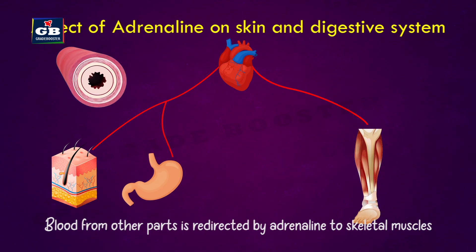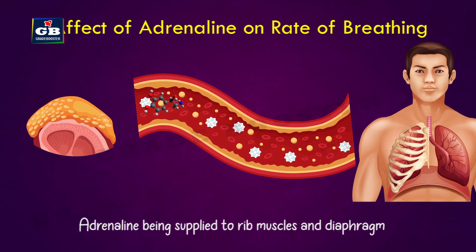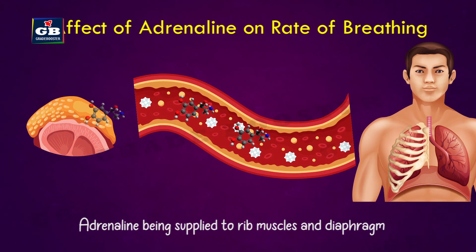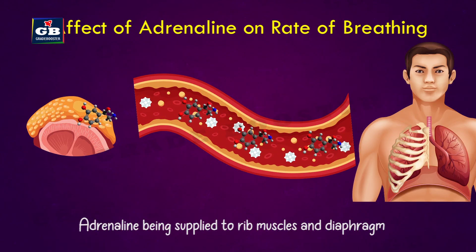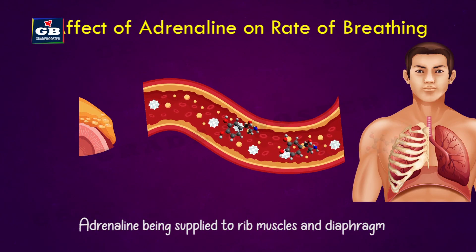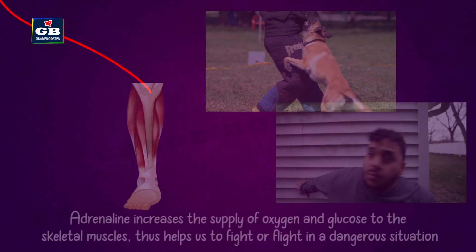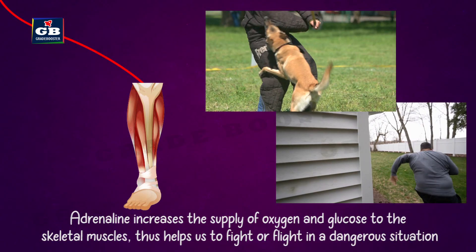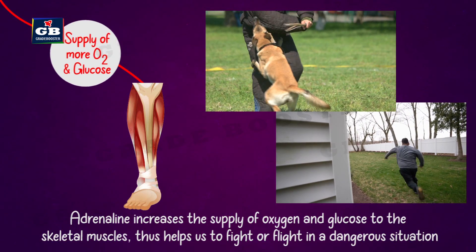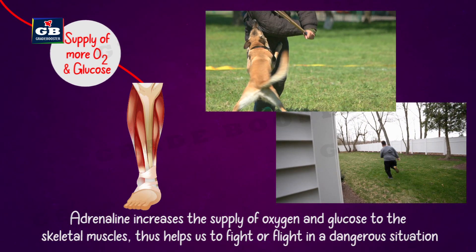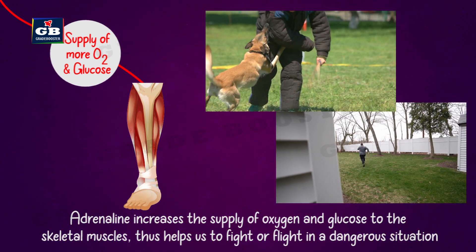This blood is diverted to skeletal muscles. Adrenaline also increases the breathing rate by increasing the muscular movements of the diaphragm and rib muscles. This is how adrenaline helps us produce a response during a dangerous or harmful stimulus.